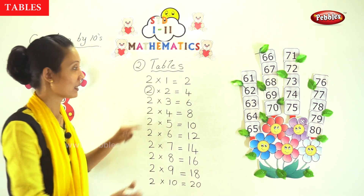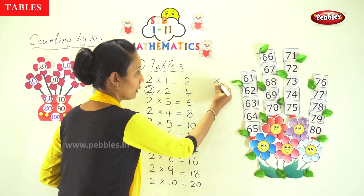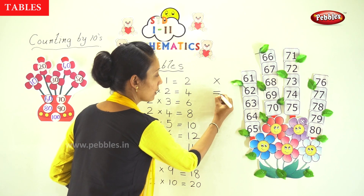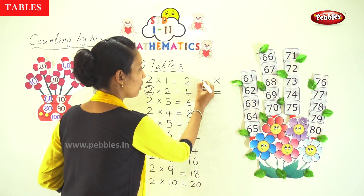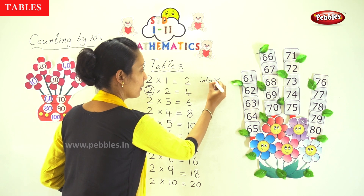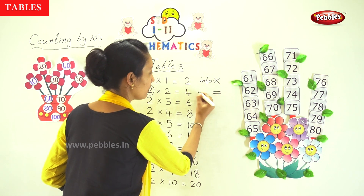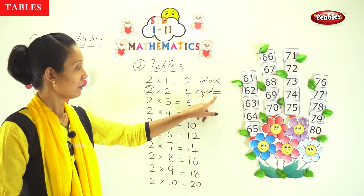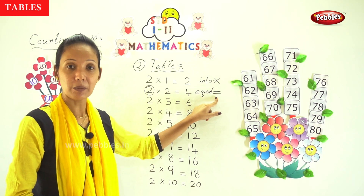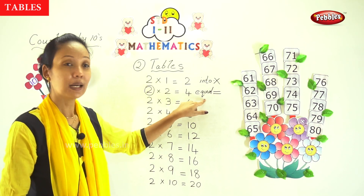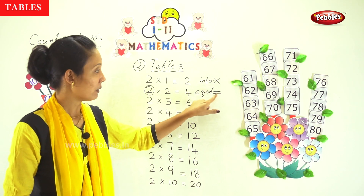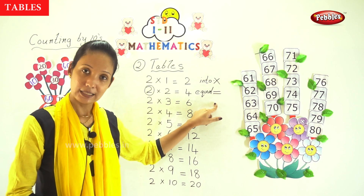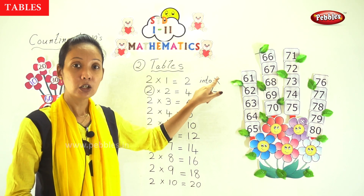This sign is called 'into' and this sign is called 'equal.' This sign is called 'into' and this is called 'equal' — equal is also called 'sumum.' So this sign is called 'into' and this is called 'sumum.'